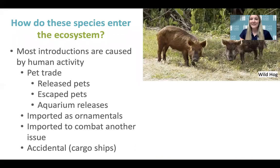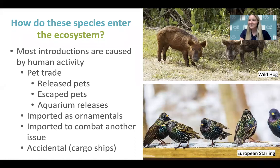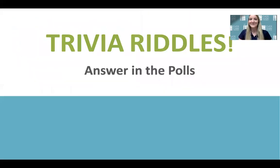The wild hog or feral pig is non-native to Florida but has been here for hundreds of years, introduced in the 1500s by Spanish explorer Hernando de Soto. It competes with native wildlife for food, can carry disease, and damages agricultural crops, lawns, and landscapes. The European starling was brought over from England in 1890 by William Shakespeare enthusiasts — it competes with native birds like the purple martin for nesting boxes and can damage food crops.